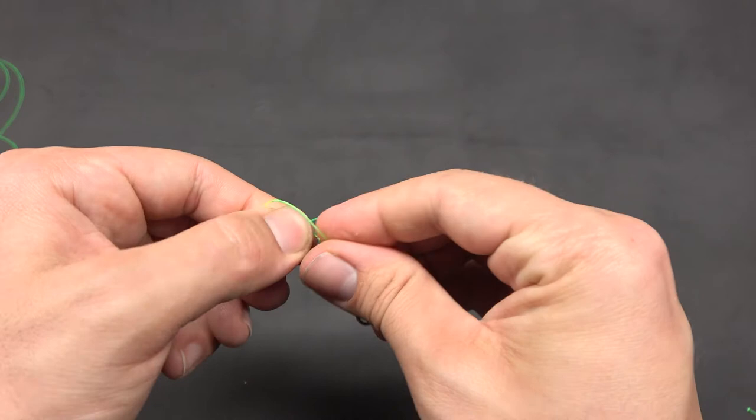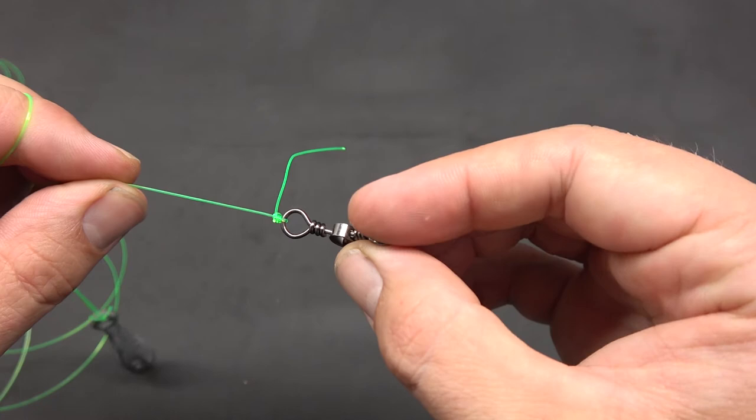Then we just cinch it tight, and that is a uni knot to complete your first swivel connection.